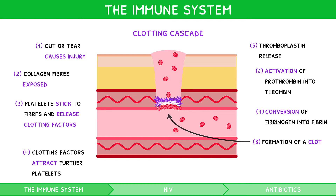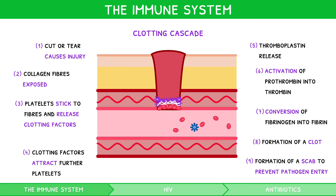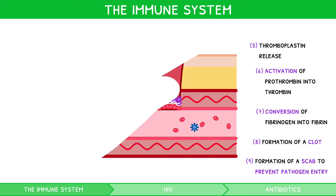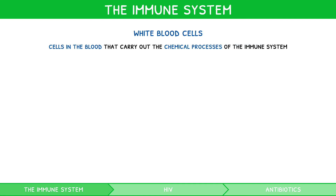This clot prevents further blood loss and dries to form a scab, preventing pathogen entry. However, even the fallback clotting cascade has its imperfections. So, what happens if a pathogen evades the barrier protection component of the immune system? This is where white blood cells are fundamental — specific cells in the blood that carry out the chemical processes of the immune system. There are many subtypes, but for your IB biology exam, you need to recall two: phagocytes and lymphocytes.